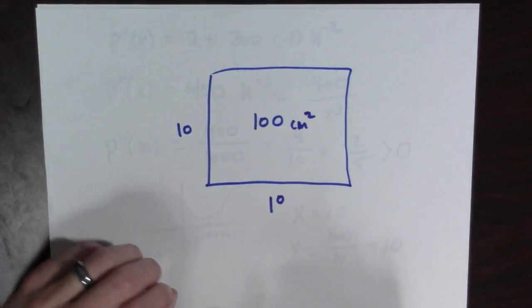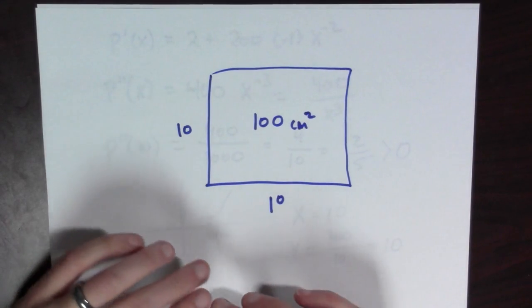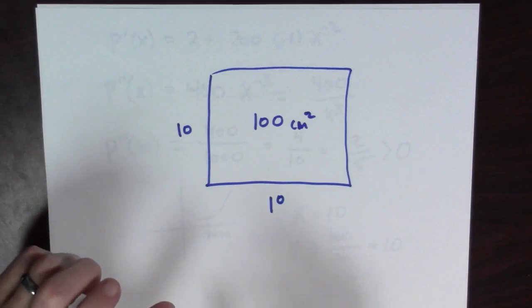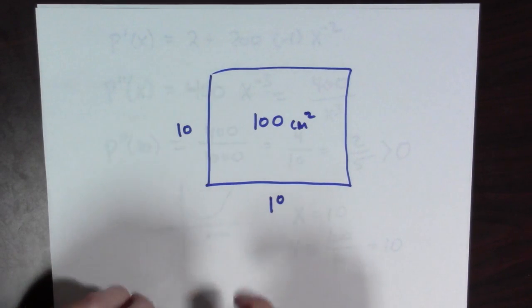And you might have known this already, but calculus allows us to verify here that our intuition is correct. Okay, that's our problem. Now, I know you might have said, I already knew that a square was a rectangle that would have the minimal perimeter for a given area. Well, I mean, that's fantastic that we already knew this, but we're using calculus to verify our intuition, alright?